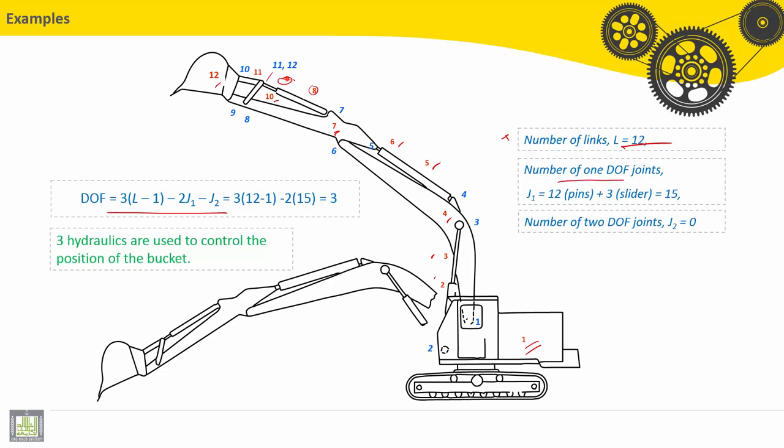Number of one degree of freedom joints, lower pair joints, J1 is equal 12 pins. First one, second one, second pin. Third one, fourth one here. Number 5 should be here, number 6 should be here.